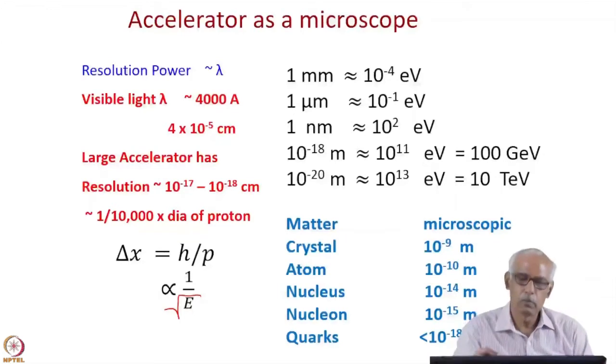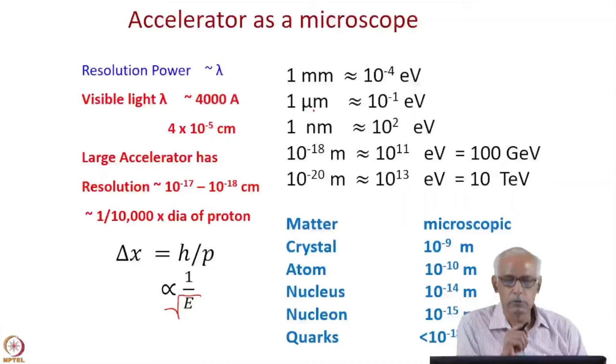And if you want to study, if you want to have resolutions of micron size then you have to go to about 0.1 electron volts. Similarly, if you want to have the resolution of 10 to the power minus 18 meters, then the energy required is energy of the particle required is 10 to the power 11 electron volts which is roughly about 100 GeV.